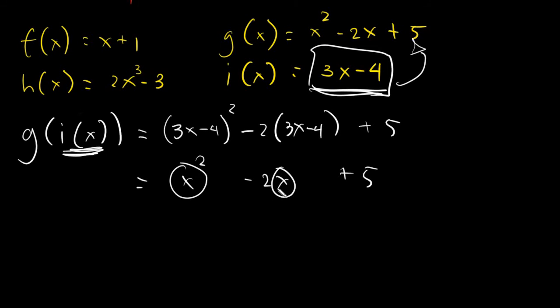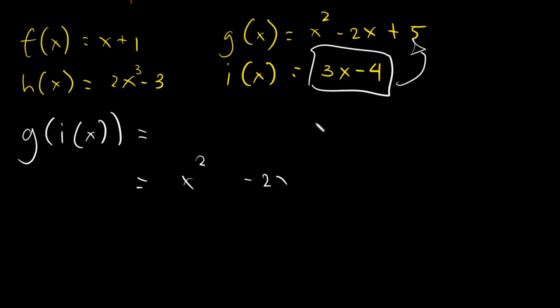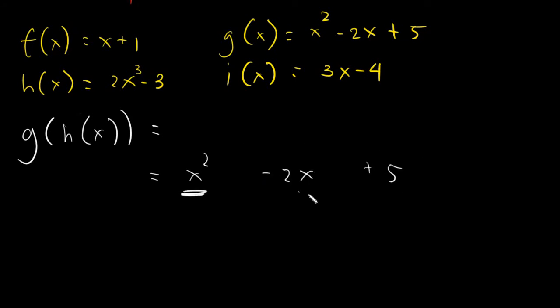So what happened to the x's here? It is replaced by the value of i. And the value of i is 3x minus 4. So let's have another example. Say I have g of h of x. Our g is x squared minus 2x plus 5. All the x's here will be replaced by what? The one inside, which is h. We have 2x cubed minus 3. So we will have 2x cubed minus 3 squared minus 2 times 2x cubed minus 3 plus 5. That's it. You will just simply put the functions inside on another function.